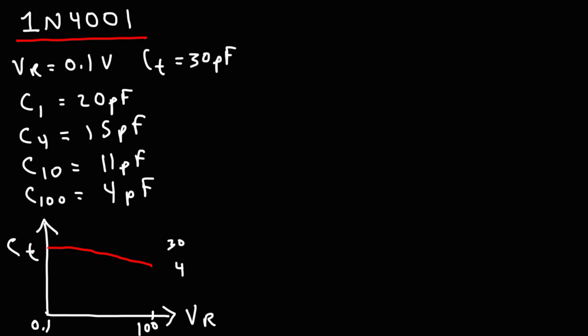This leads to an important term: the capacitance ratio, which tells you how the capacitance changes with respect to reverse voltage changes. The 1N4001 diode has a low capacitance ratio, because the capacitance doesn't change much given a large change in reverse voltage. As the reverse voltage changes from 0.1 to 100 volts, the junction capacitance decreases only from 30 to 4 pF — those are relatively small changes.